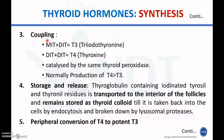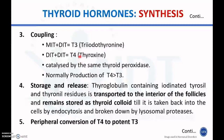The third step is coupling. Monoiodotyrosine combines with diiodotyrosine to form triiodothyronine (T3), and diiodotyrosine combines with another diiodotyrosine to form T4, which is thyroxine. This coupling process is catalyzed by the same enzyme, thyroid peroxidase. At this stage, production of T4 is greater than T3.